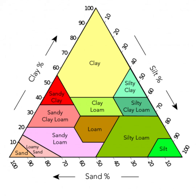The soil texture triangle is a practical tool for soil scientists, agronomists, and farmers to understand and classify different soils. It provides insights into soil water-holding capacity, drainage, aeration, and nutrient retention, all of which are crucial factors in agricultural and environmental management. Soil textural information is often used in conjunction with other soil properties to make informed decisions about crop selection, irrigation, and soil amendments.